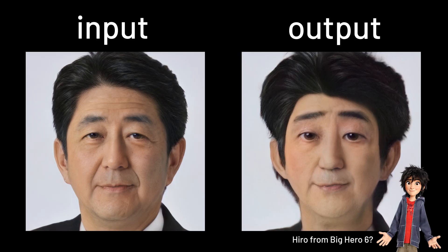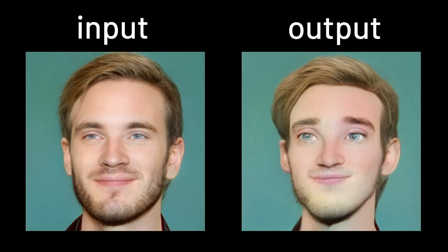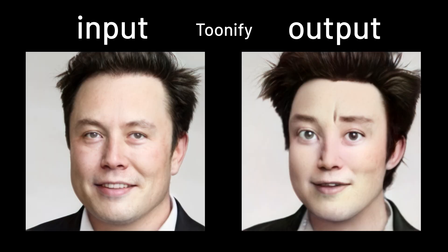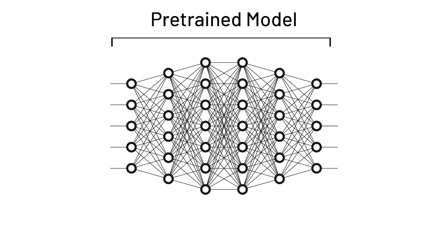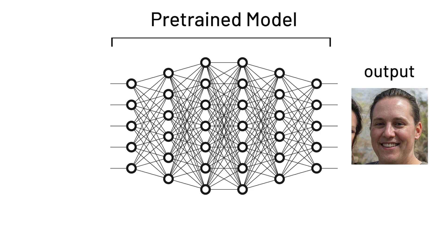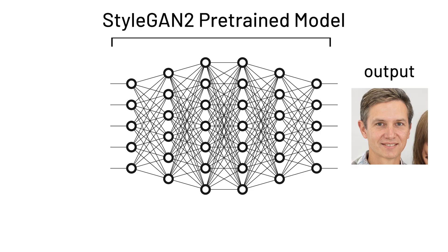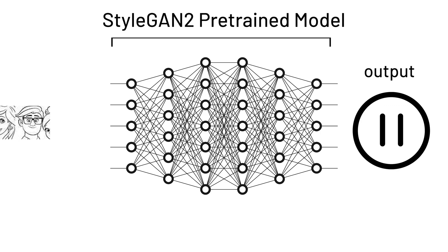And what you are seeing here is a modified model called Toonify. What is special about this model is that unlike normal training where people reuse the original pre-trained model, in this case that would be StyleGAN2, and train with a new set of data on top of that pre-trained model to adjust the model towards something that looks more like a cartoon character.